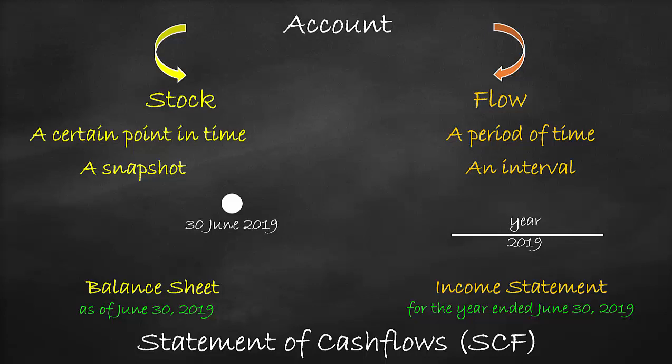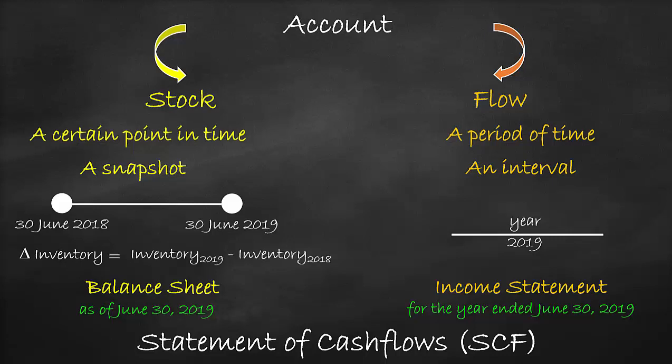Therefore, in order to be consistent and compare apples to apples, we need to convert the day into the year. This is done by getting the difference between two consecutive balance sheets. We will get the difference of a balance sheet item in 2019, such as inventory, and use the same item from a balance sheet in 2018, in order to show approximately what happened to inventory during the year. Consequently, changes in inventory are estimated as inventory in 2019 minus inventory in 2018.